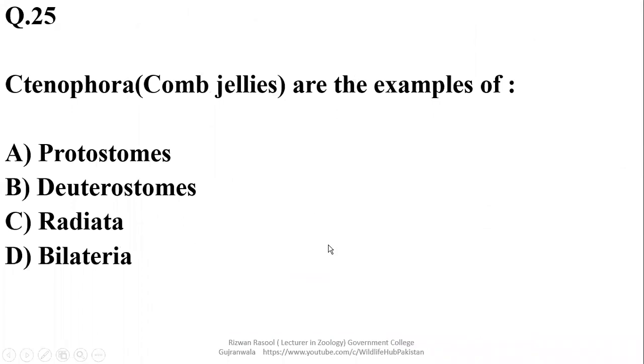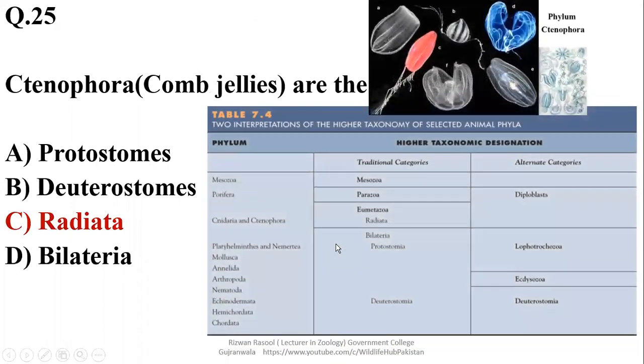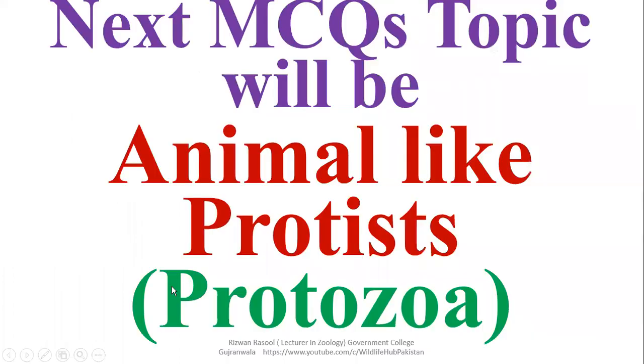Ctenophores and cnidarians, they are the examples of Radiata grade and they will be discussed in detail in the upcoming chapters, so right option is charlie. Next discussion will be about animal-like protist inshallah or protozoa from the same edition, 5th edition chapter number 8. Milarehnalli, thank you for watching, Allah Hafiz.